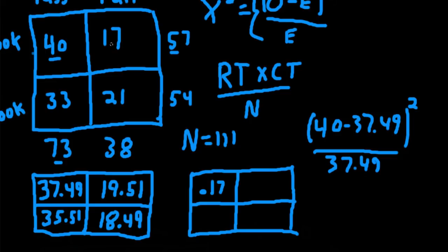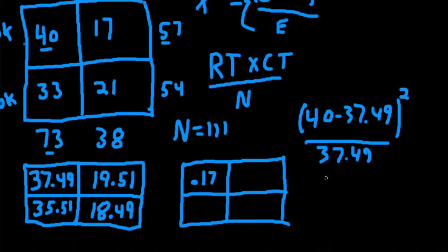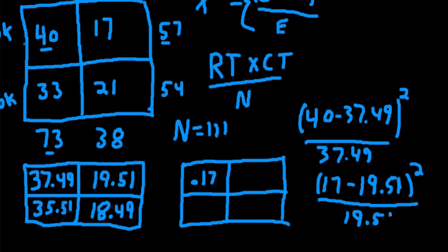Now we'll do the same thing for this cell here. We'll take 17 minus 19.51, square the difference, and then divide it by the expected value, which is 19.51. And then we get 0.32.